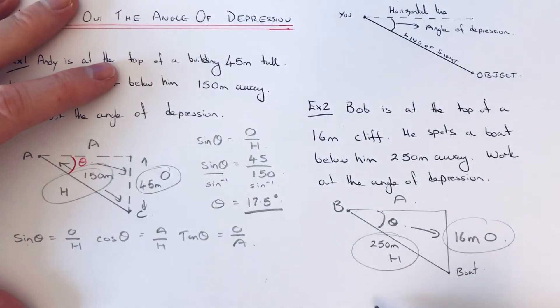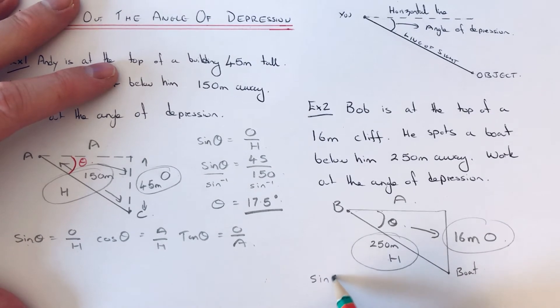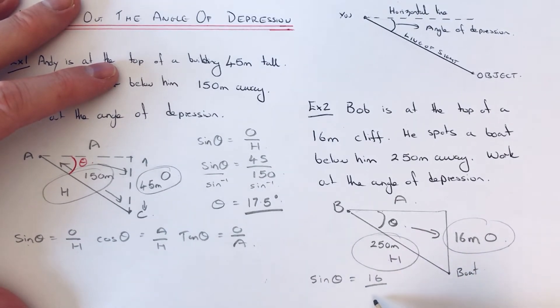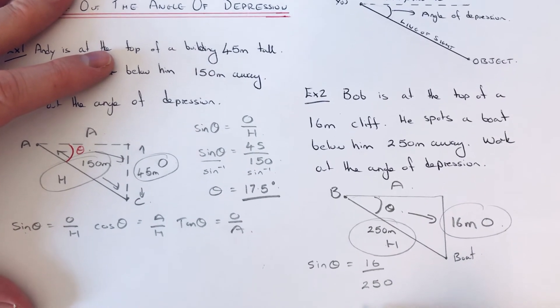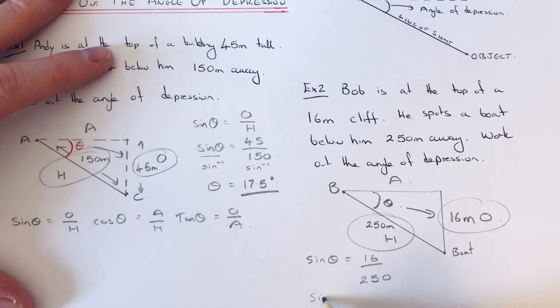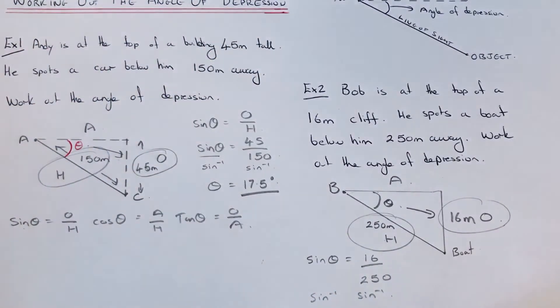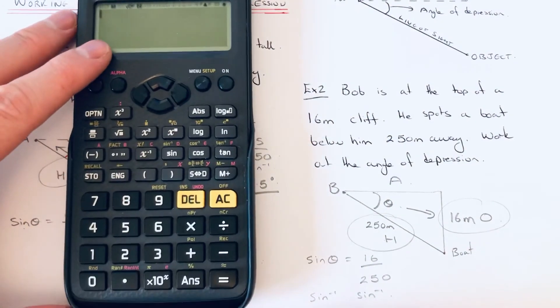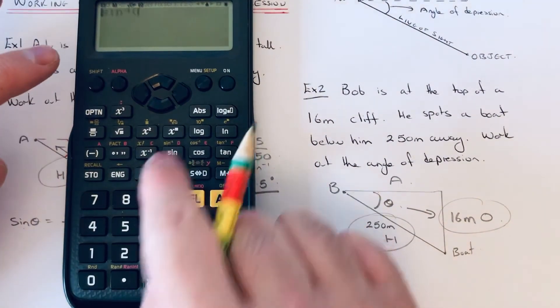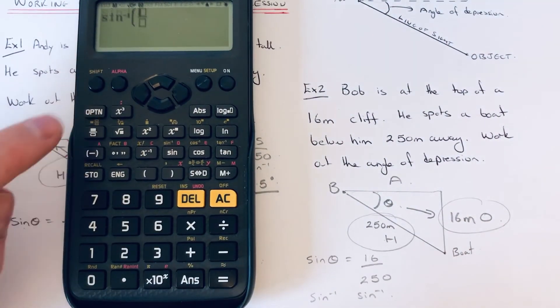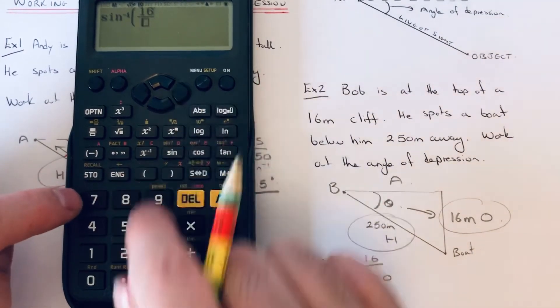So it would be sin theta equals O, which is 16 over 250. So again, we just need to sin inverse this fraction. So if we get the calculator and we go shift sin, fraction 16 over 250.